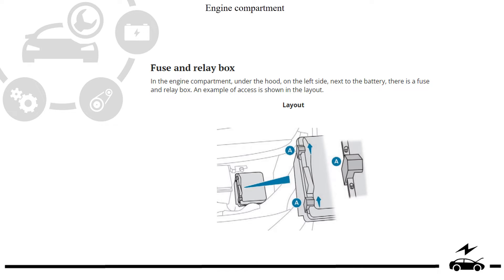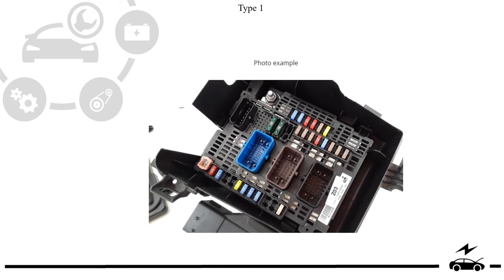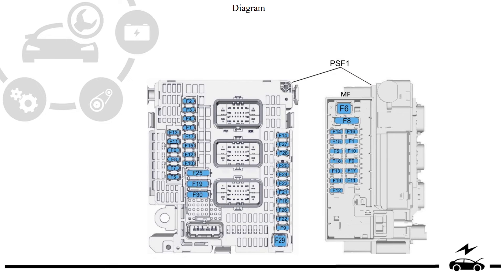Engine compartment fuse box: location. Type 1 — photo, diagram.